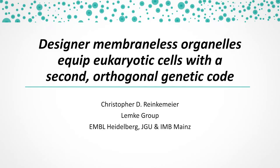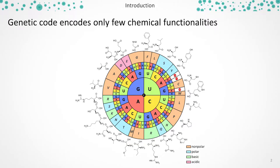Today I'm going to tell you about the goal of creating synthetic membranous organelles in the cell to equip cells with a second orthogonal genetic code. Our major motivation is that when you look at the genetic code, which determines how proteins are synthesized in the cell, it's comparatively simple and only contains broadly four different types of chemical functionalities. You have the 20 canonical amino acids, which can all be classified into polar, non-polar, basic, and acidic amino acids.